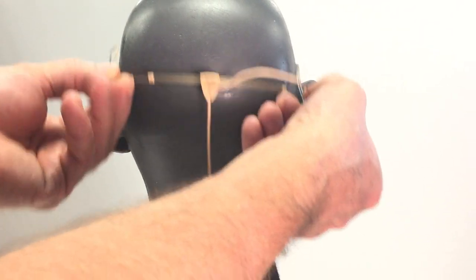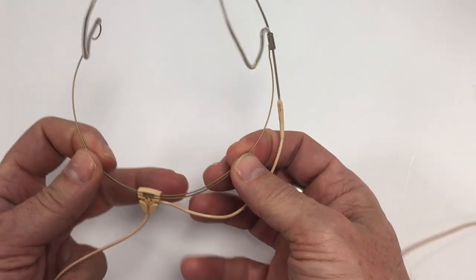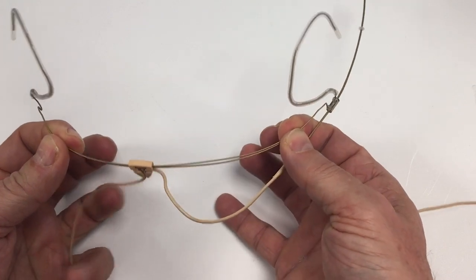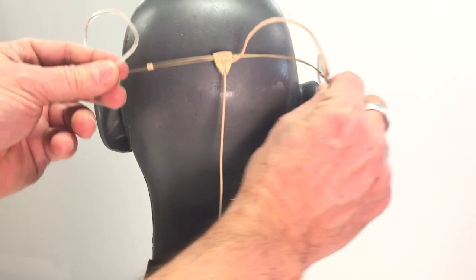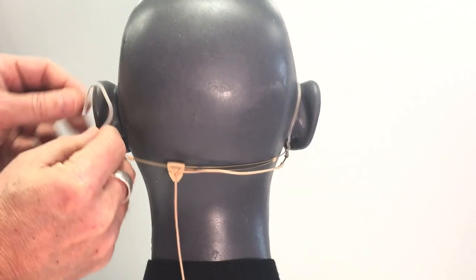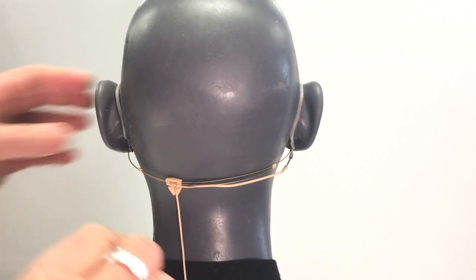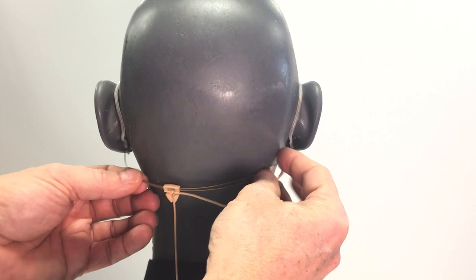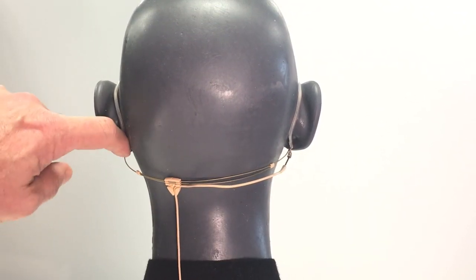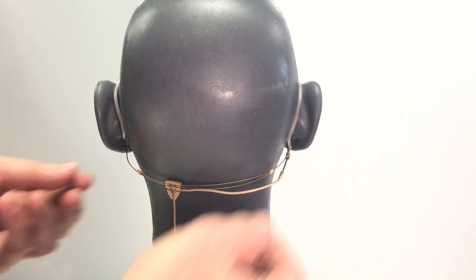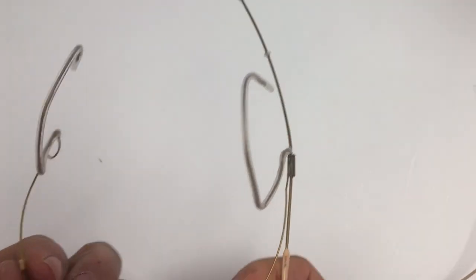You unmount the headset again and pull these two plastic parts here to make the headset smaller. Try it on again and feel if it's sitting nice and tightly behind your neck. If it's a bit too open here and over here as well, take it off once more.